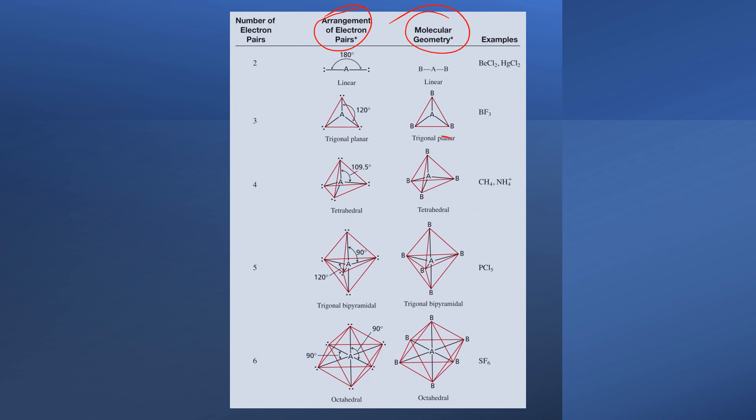We can go through these cases one by one looking at situations. Do we have three atoms, four atoms, five atoms, six atoms bonded to our central atom? Let's kick off, actually, if we have two atoms bonded to our central atom.